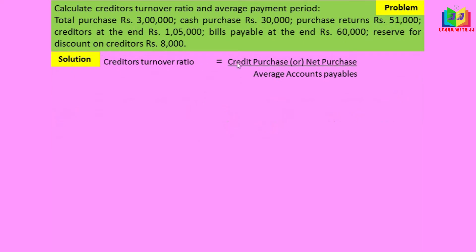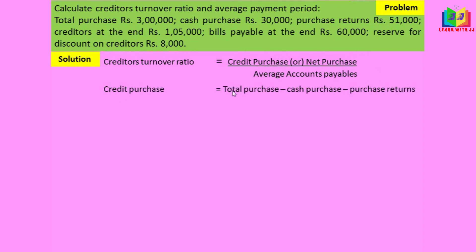The formula for creditor turnover ratio is credit purchase divided by average accounts payable. Since we have the credit purchase data, we don't need net purchase. Credit purchase equals total purchase minus cash purchase minus purchase return: 3 lakh minus 30,000 minus 51,000 equals 2 lakh 19,000.